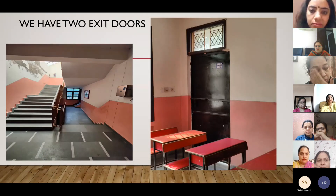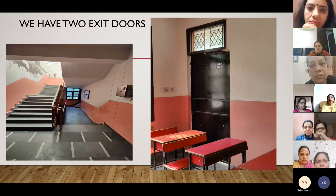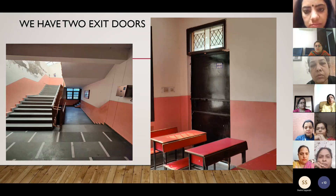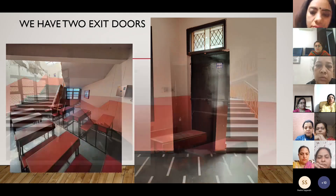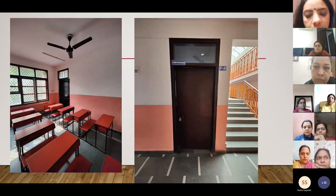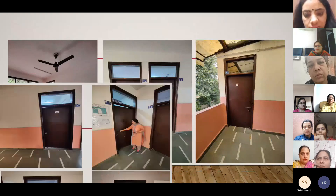There are two emergency exits on the first floor. One emergency exit is from room F8, which directly leads to the school ground. The other is in front of room F6, which leads to the corridor of the ground floor. Children from rooms F1, F2, F3, and F8 will take the exit from the emergency door of room F8. Students from F4, F5, F6, and F7 will use the staircase.